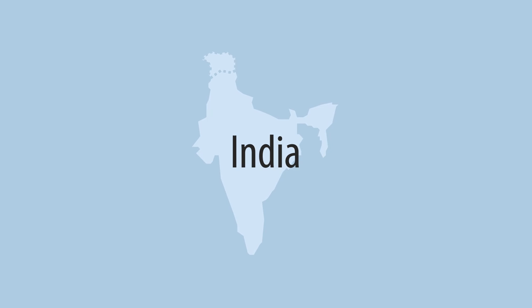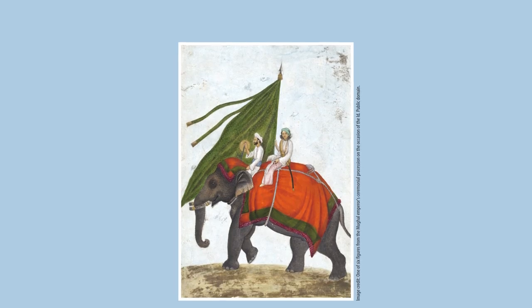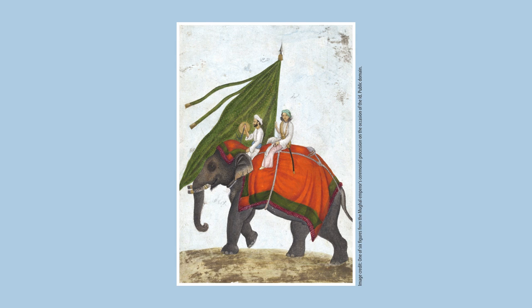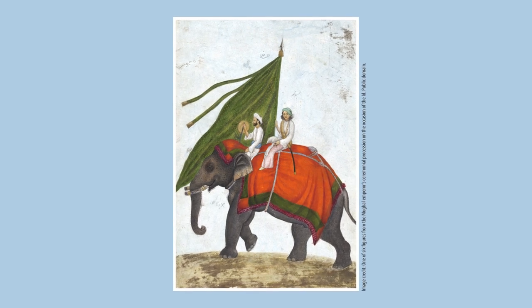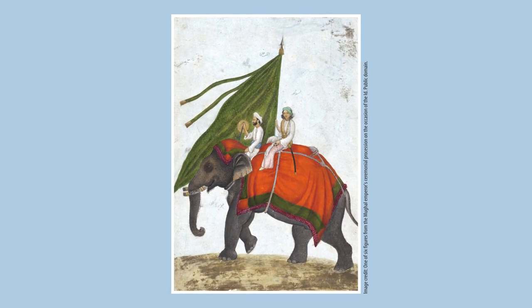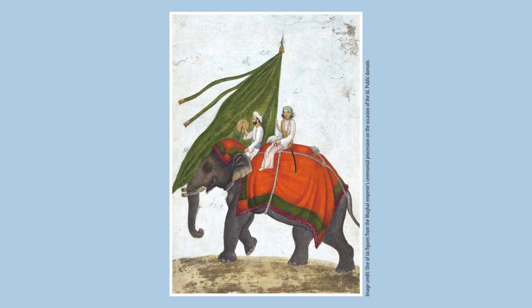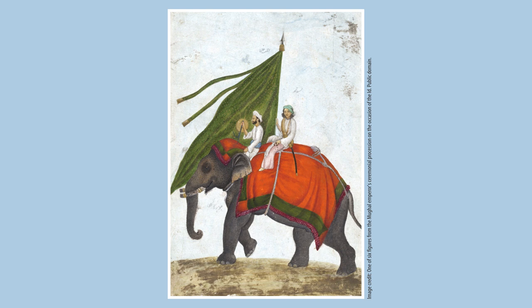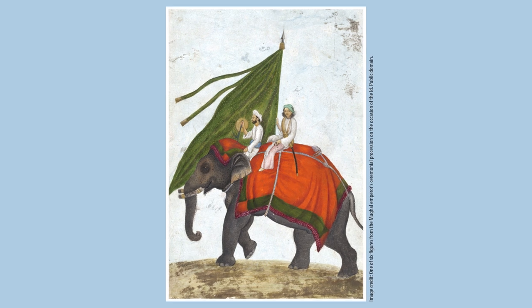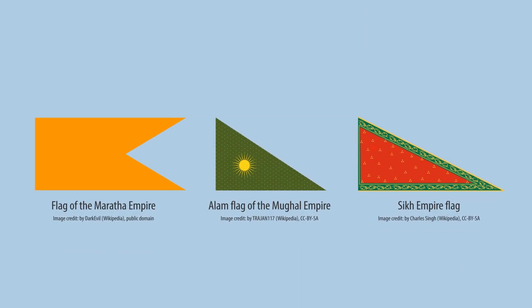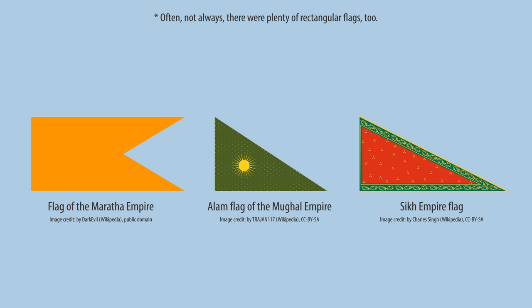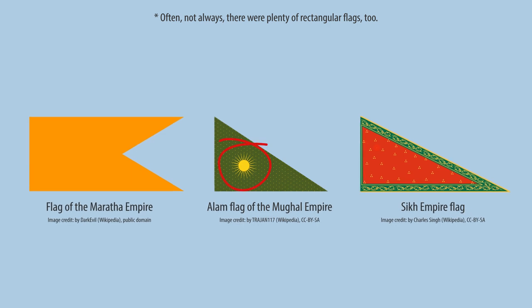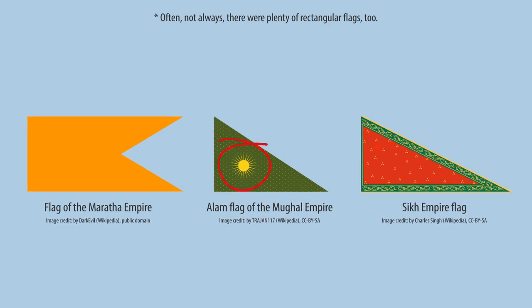In ancient India, flags had similar importance, being carried on chariots and elephants. The fall of a flag here, too, meant defeat, or at least confusion during battle. They were often triangular, with red or green, and a figure embroidered in gold.